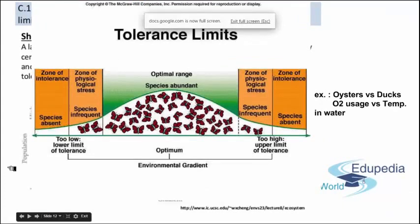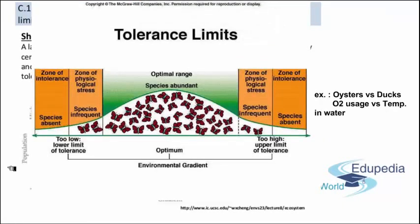Another classical example is oxygen usage in water considering temperature. The higher the water temperature, the more solubility of oxygen rises, and usage also rises because the metabolic rate of sea creatures rises as well. Ectotherms become more active the higher the temperature is and use more oxygen — but only up to a certain extent, which is the optimal range. Above that, there is a zone of physiological stress: the higher the temperature gets, the less oxygen is available, the metabolic rate starts increasing rapidly until the death of the species — the zone of intolerance.